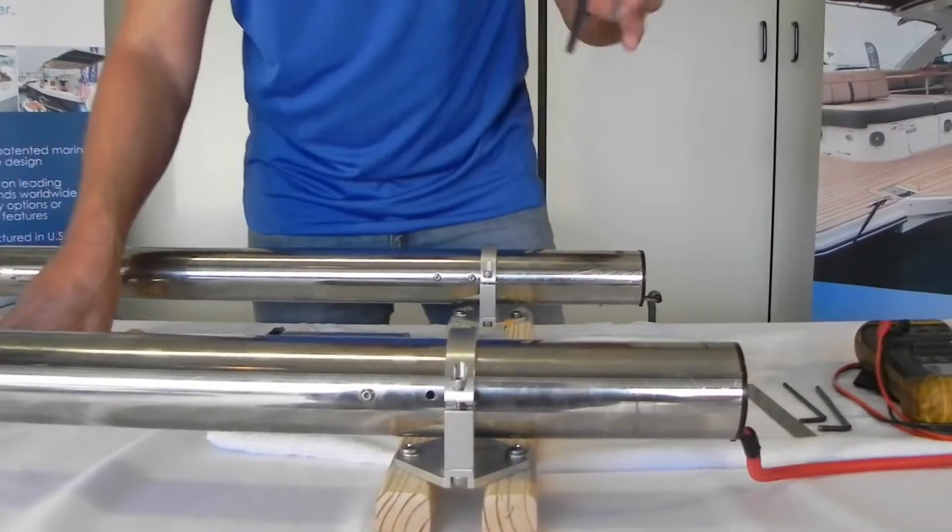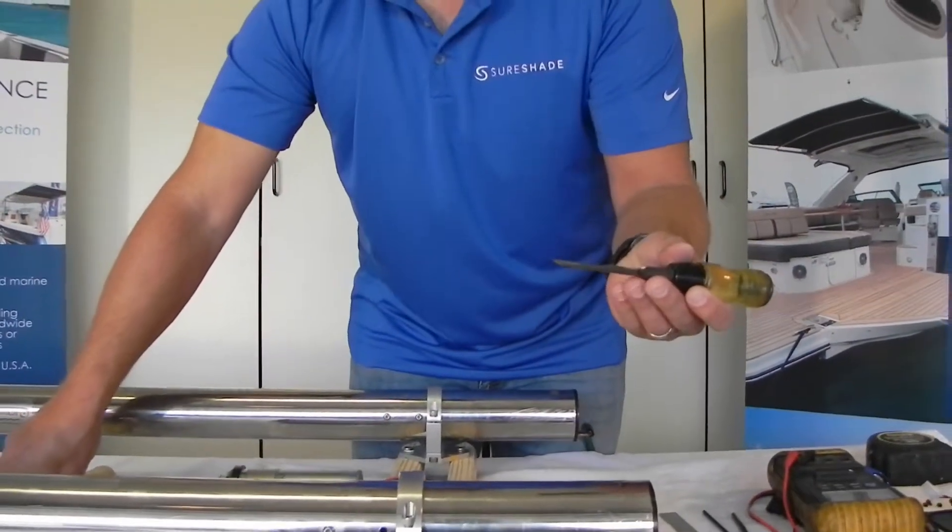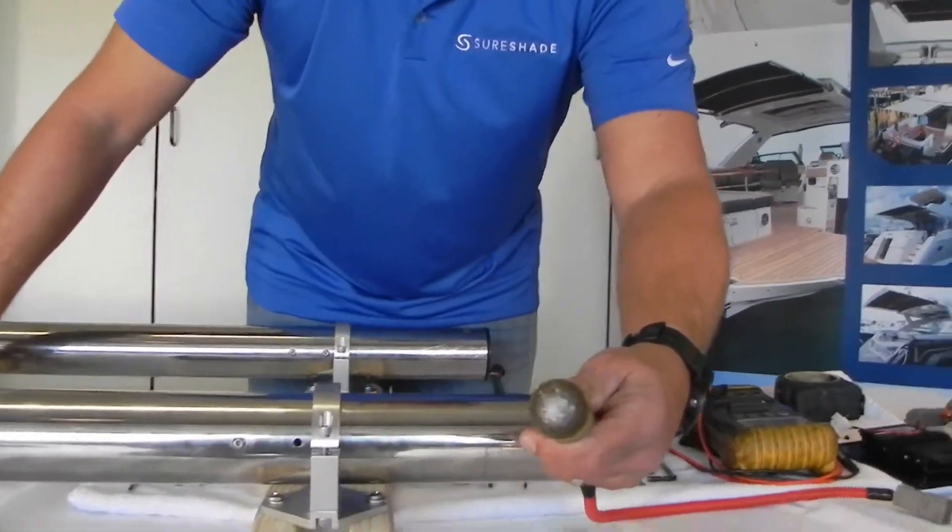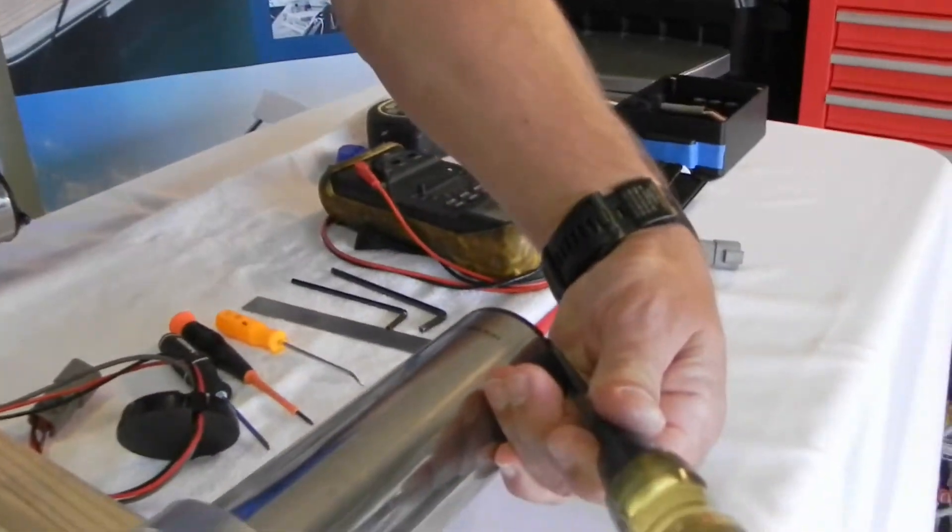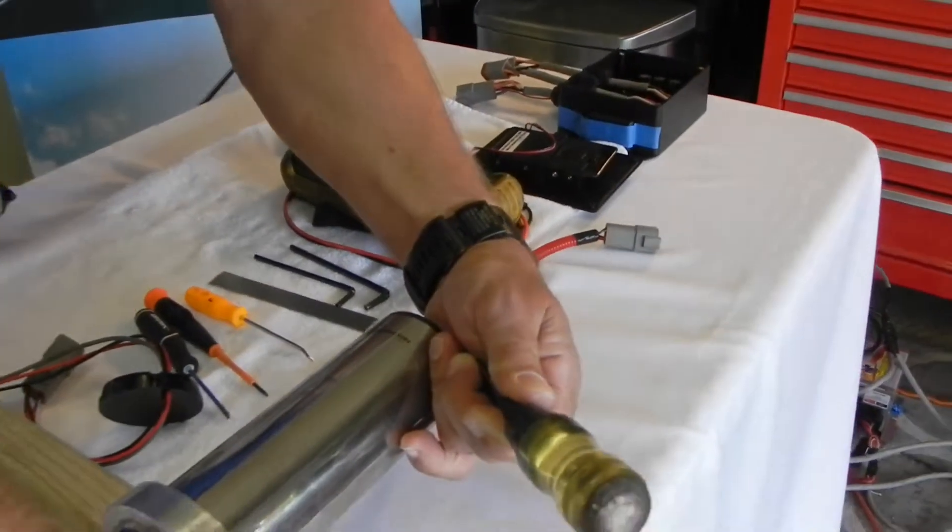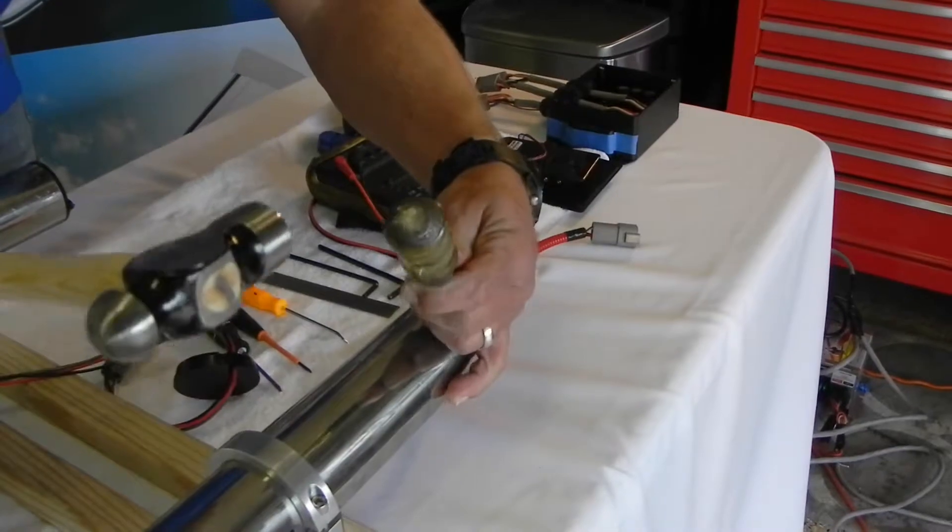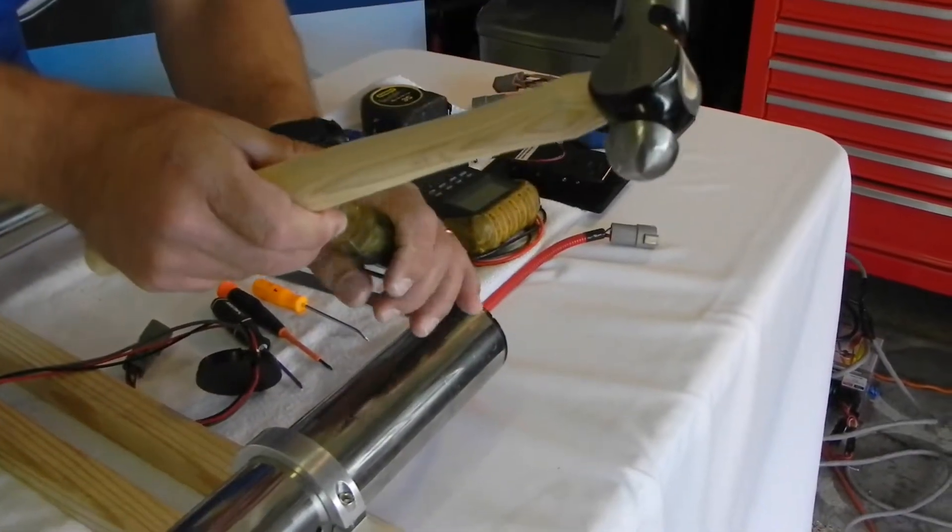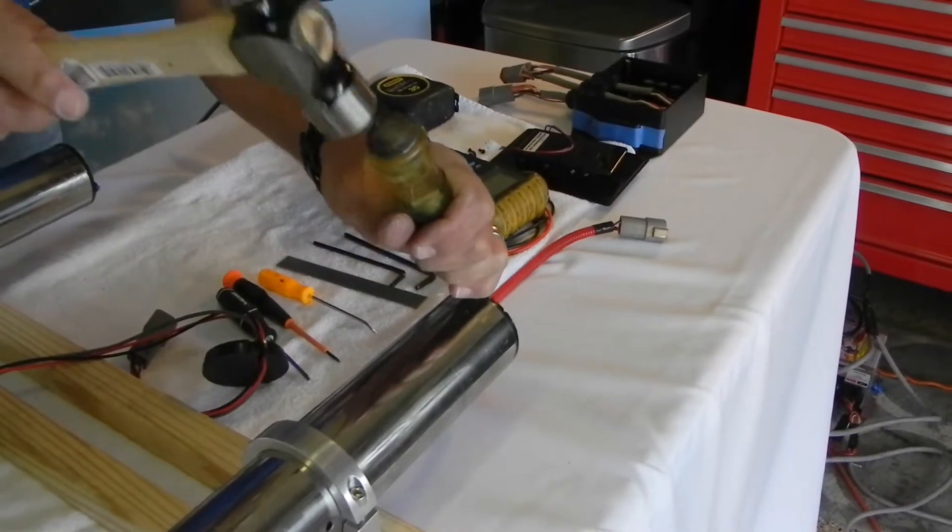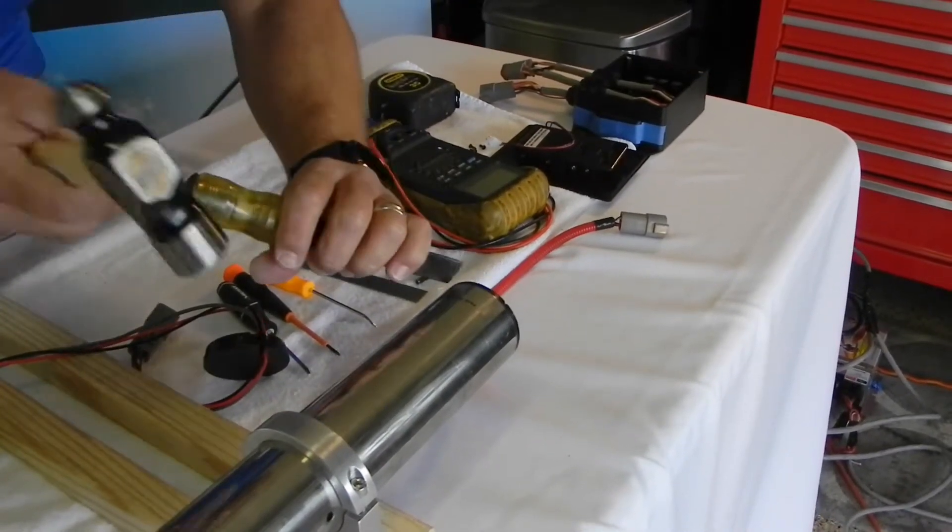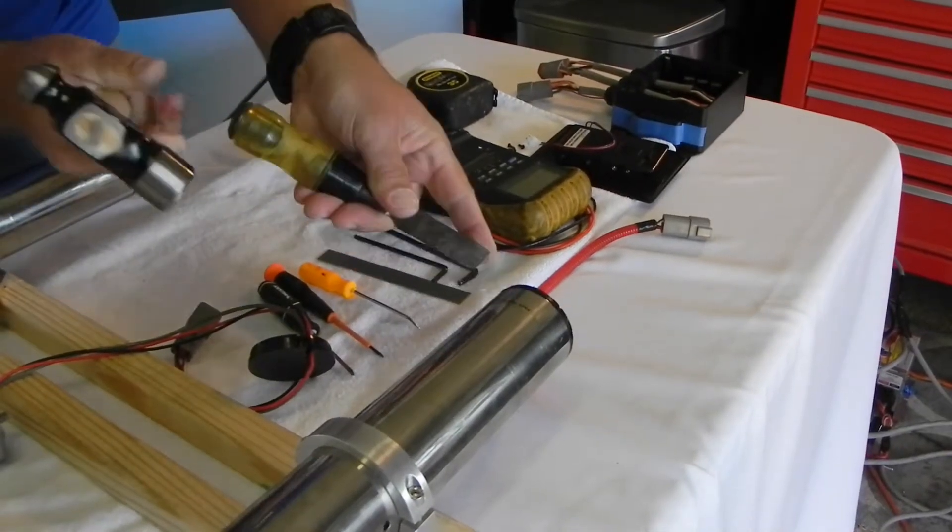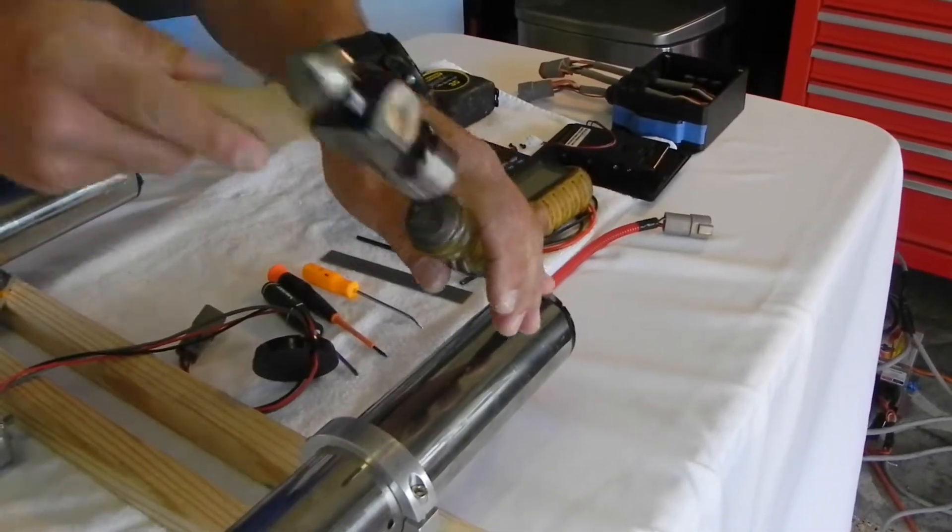Then what you're going to do is take a dull chisel or flat-bladed screwdriver. And what you want to do is take a pretty decent angle at it. Don't take it like this because you're just going to take a chunk off the end of the cap. You're going to start on one side, tap, and you'll see the cap will start to come off.